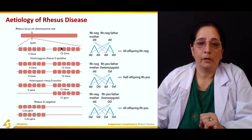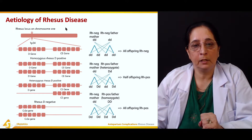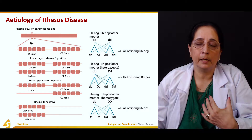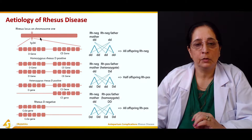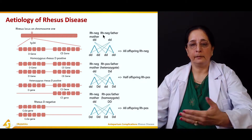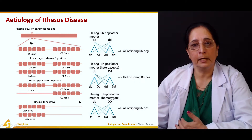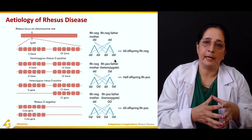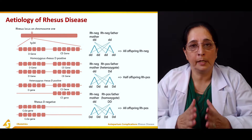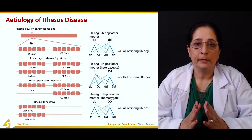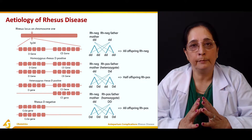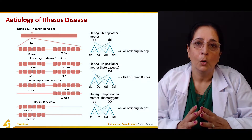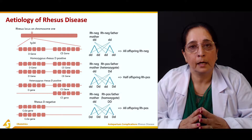The causes of Rhesus disease are usually the presence of the D gene. We can divide Rhesus disease into three scenarios. In the first scenario, the mother is Rh negative — she does not have the Rh factor, and may be A negative, B negative, AB negative, or O negative. If both the mother and the father are Rh negative, all offspring will be Rh negative, and no Rhesus disease or complications will occur.